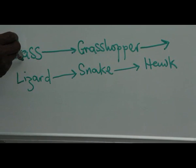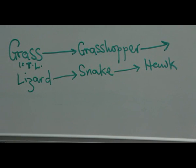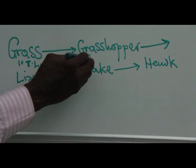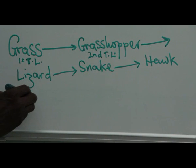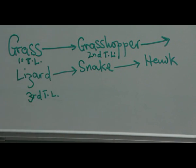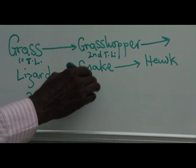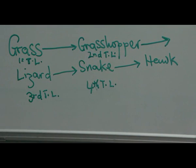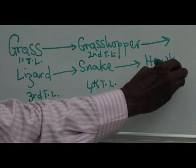The grass occupies the first trophic level — that is the position of manufacturing food for itself and others. The grasshopper occupies the second trophic level; it's an herbivore, it feeds on the grass. The lizard, which feeds on the herbivore directly, occupies the third trophic level. The snake feeding on the lizard occupies the fourth trophic level, and the hawk, which feeds on the snake, occupies the fifth trophic level.